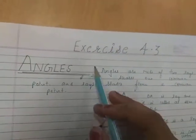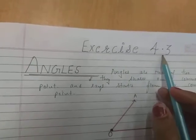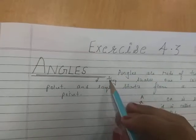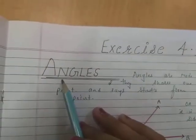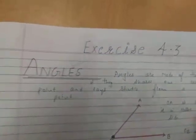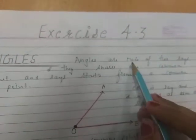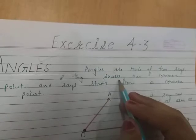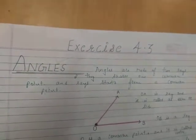Good morning students of Class 6. Today we discuss Exercise 4.3. Before doing the questions, we first understand the concept. In the previous exercise we learned about curves and polygons, but in this exercise we learn about angles. Angles are made up of two rays, and those two rays share one common point.